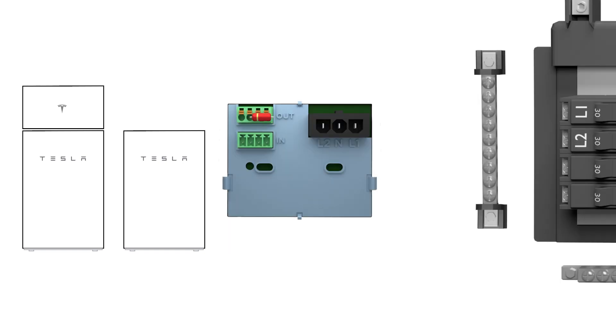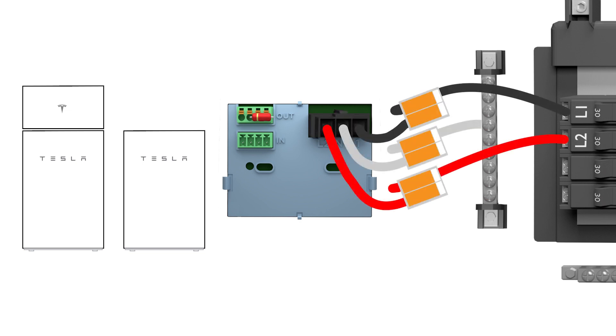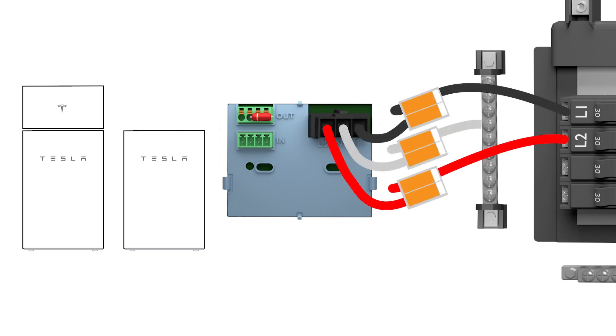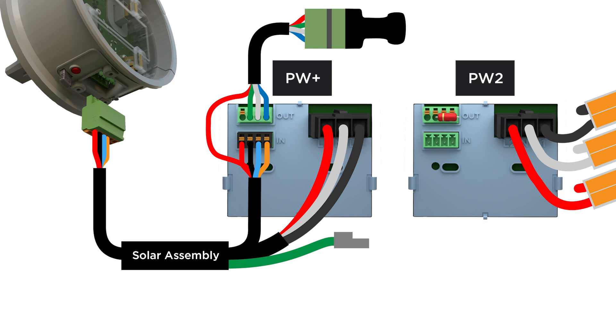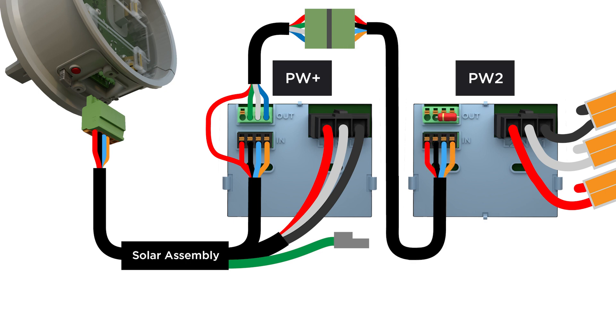Powerwall Plus can be installed with up to three additional Powerwall 2 units. Each Powerwall 2 unit will need its own AC circuit connected to a two-pole, 30-amp breaker. Communication cable must be daisy-chained from the Powerwall Plus battery assembly to each additional Powerwall.